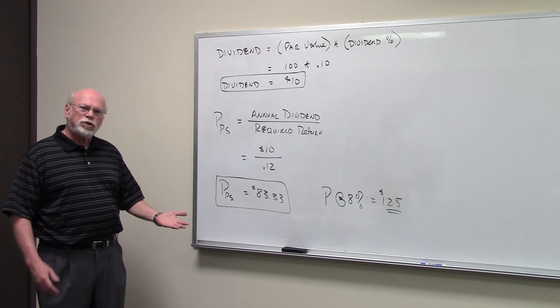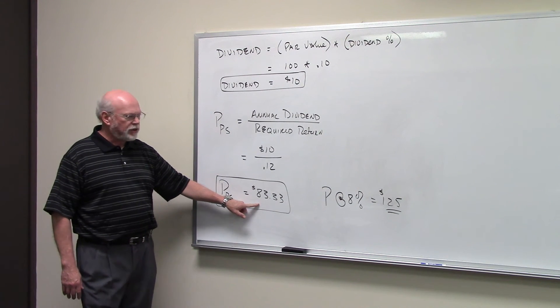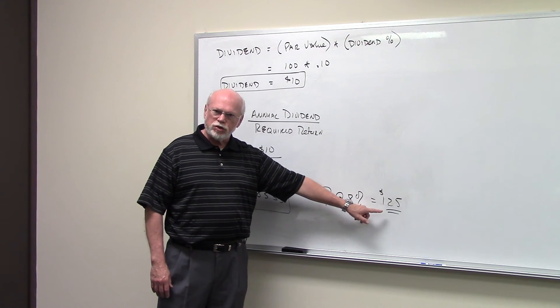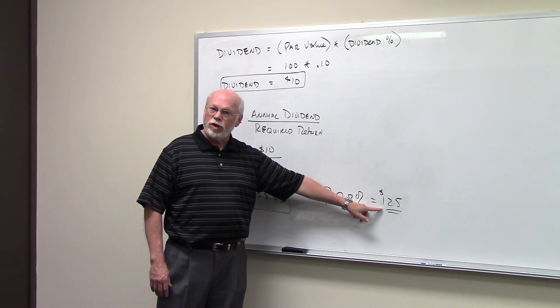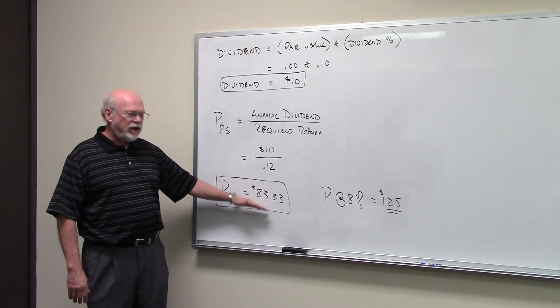Remember that when it was an 8% interest rate, the price of the preferred was $125. So again, interest rates rise, the value of the stock goes down.